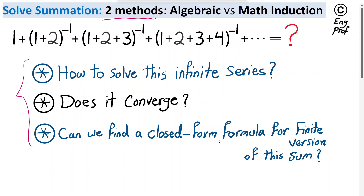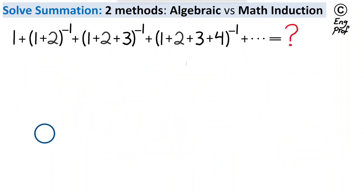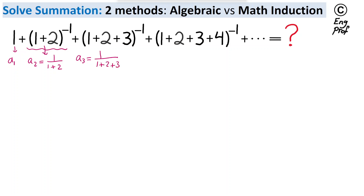So to do that quickly, let me start with the algebraic method. For that, we have the general term of this summation. The first term A1 is 1. The second term A2 is 1 over 1 plus 2. The third term A3 equals 1 over 1 plus 2 plus 3. You can extrapolate and see that the nth term of the summation is 1 over 1 plus 2 plus 3 plus up to n.